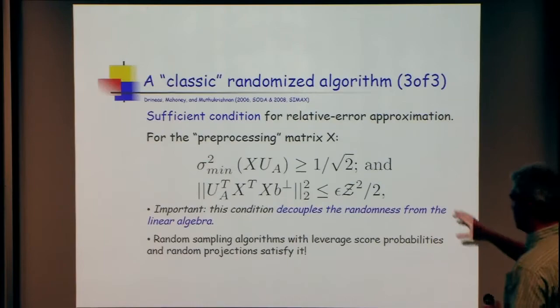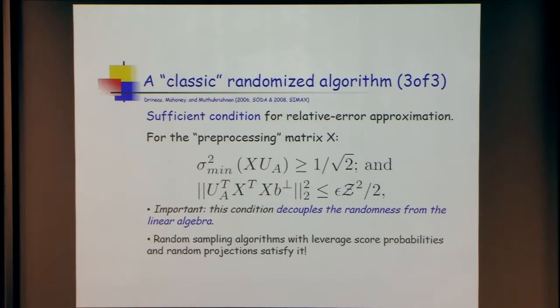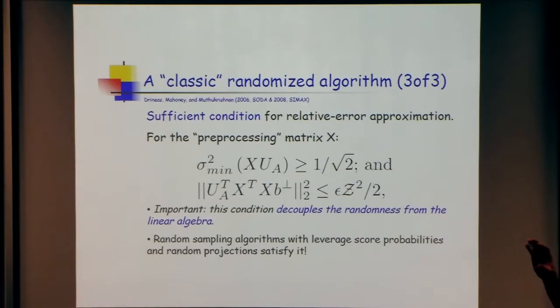This is a deterministic statement, independent of any randomness, that talks about how the sketching operator interacts with the vector space structure. We're sampling a small number of rows — constraints — and doing a rotation in n dimensions that zeroes out the vast majority of things, but with a small angle. Preserving rank is basically saying the angle between the two subspaces is small. That's the interpretation of both conditions.